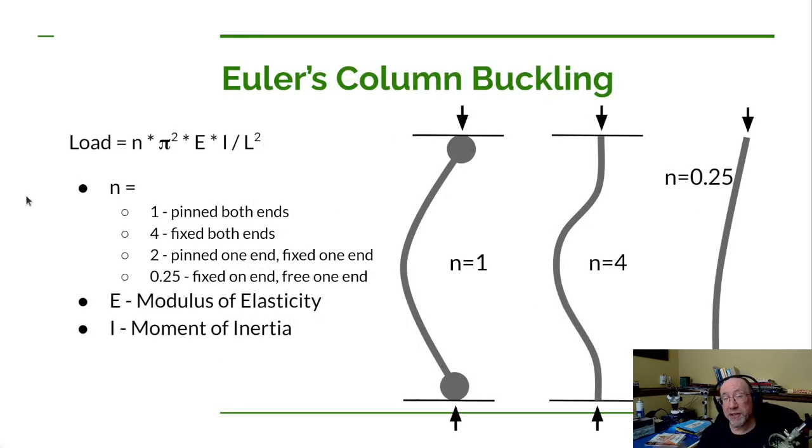Here's the only page where we're going to talk about an equation, although we're not going to do the calculations. We can calculate the load limit of a tube using Euler's column buckling equation, and that's this equation right here. There are four different conditions of the end points of the tube that we can use in this calculation. So let's talk about it over here. The first one, which is this n number here, those are the four conditions that we can put in here.